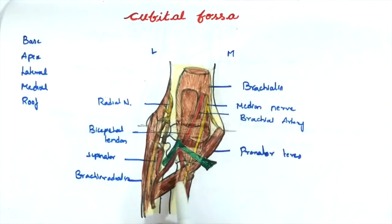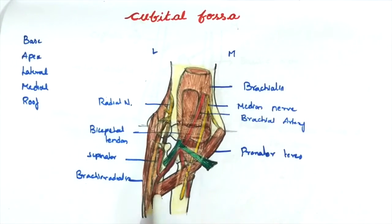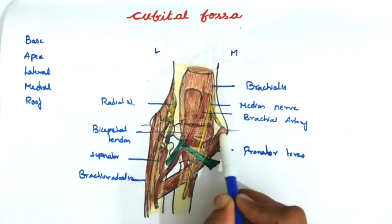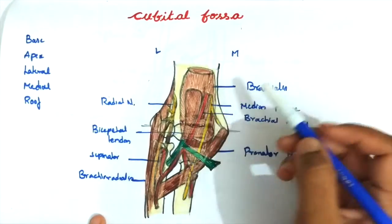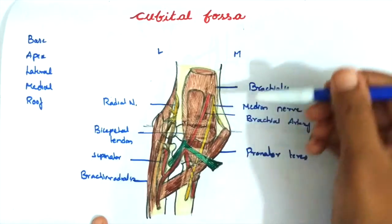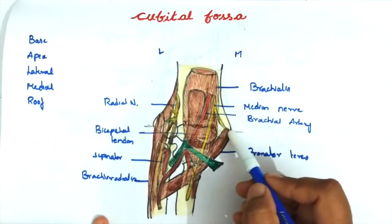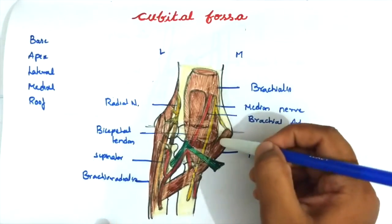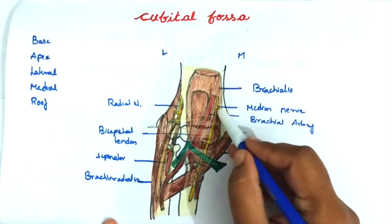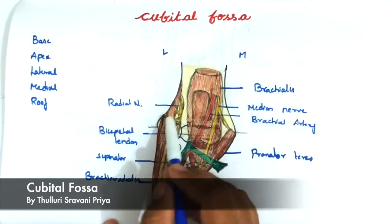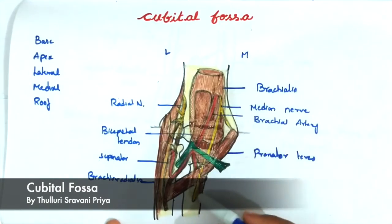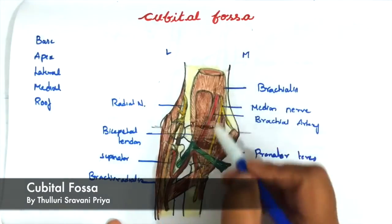The pronator teres has a humeral head and an ulnar head. The median nerve descends vertically and passes between these two heads. It gives a branch to the pronator teres muscle just above the level of the elbow, then passes downwards into the flexor compartment of the forearm.